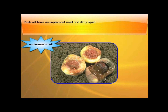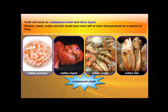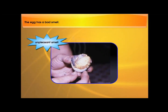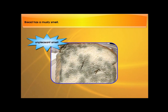Fruit will have an unpleasant smell and slimy liquid. Prawns, meat, crabs, and fish smell bad when left at room temperature for a period of time. The egg has a bad smell. Bread has a musty smell.